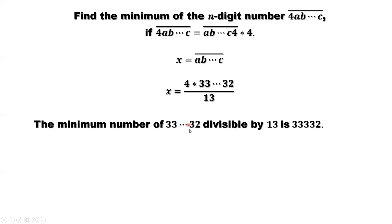Minimal means we need to find a number where this equation is true. We may have many solutions, but we only need the minimum one. So here we find X. X equals 4 times this number divided by 13. That's this number. This is not our answer.